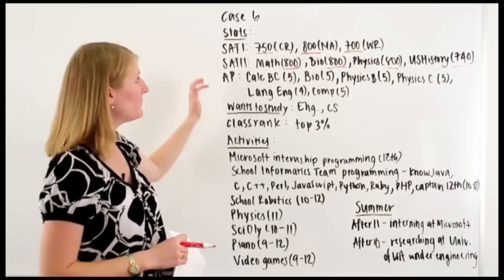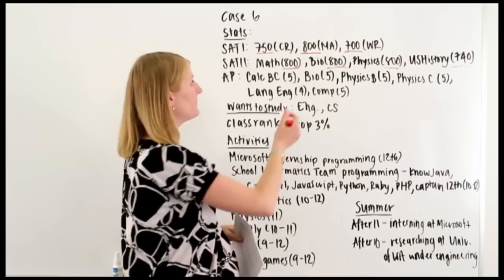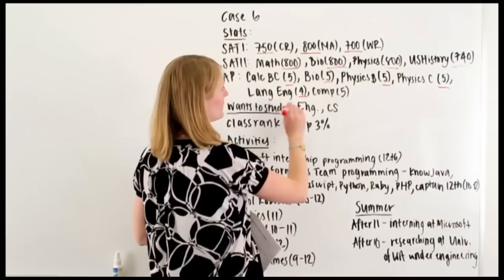And then if we look at the APs, really strong APs. Take a look. Calc BC 5, bio 5, physics 5, took both physics B and C and got a 5 in both. English language and comp got a 4 and a 5.